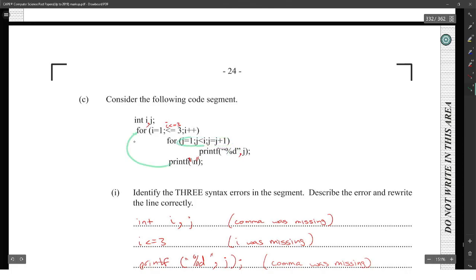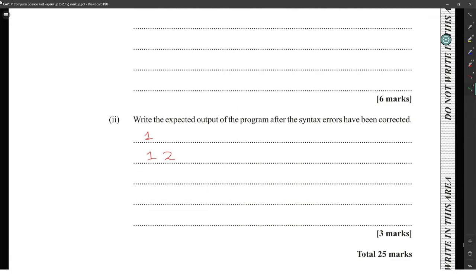So the first value printed will be j equals one, because this inner loop will only go one time. Then the outer loop goes up again and i will go to two, so j goes from one to two — you'll print one and two, because this loop will run twice. Then the loop goes back up and i will become three. But because three is equal to three, the inner for loop will now stop because three is not less than three — the only numbers less than or equal to three that satisfy the inner loop condition are one and two. So you only get one then one, two printed.